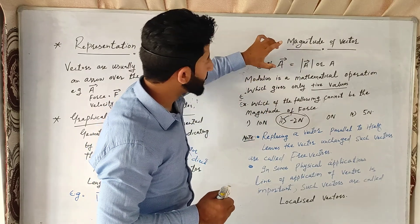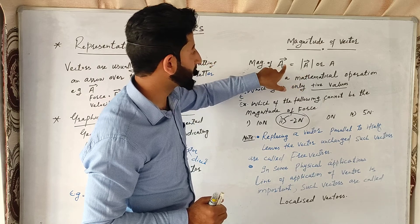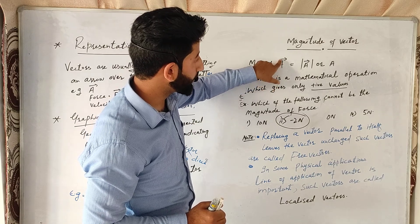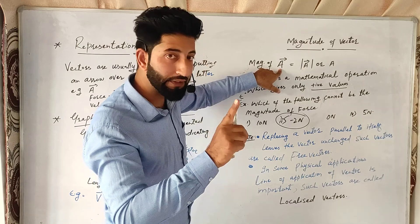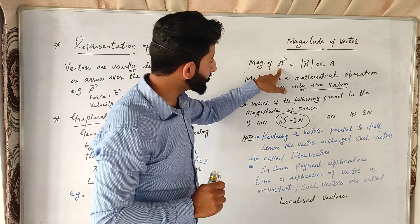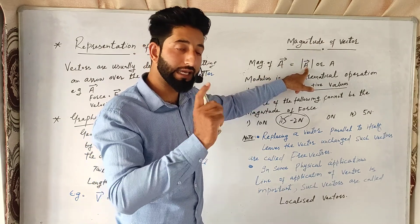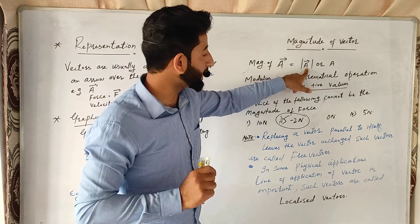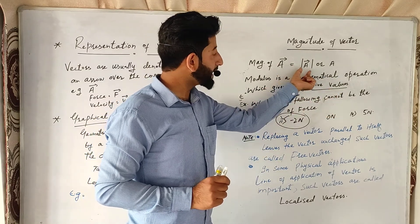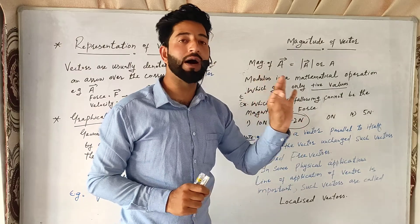Iske baad, modulus operator — jo mathematical operator hota hai — modulus operator se hum represent karte hain the magnitude of the vector. Ek vector hai hamare paas — vector A with an arrow sign — it represents two things: ek to hoga iska magnitude, aur doosra represents direction. Modulus ek mathematical operation hai which gives only the positive value.